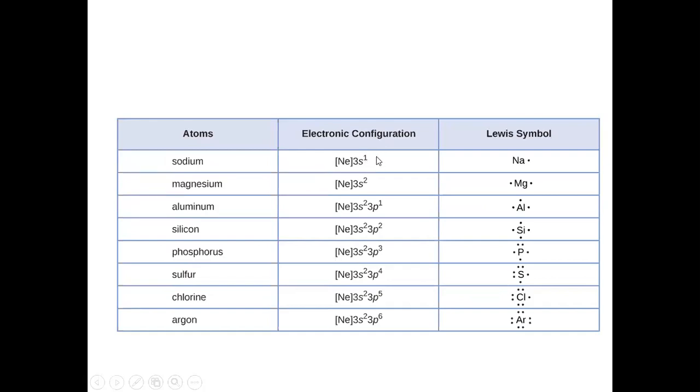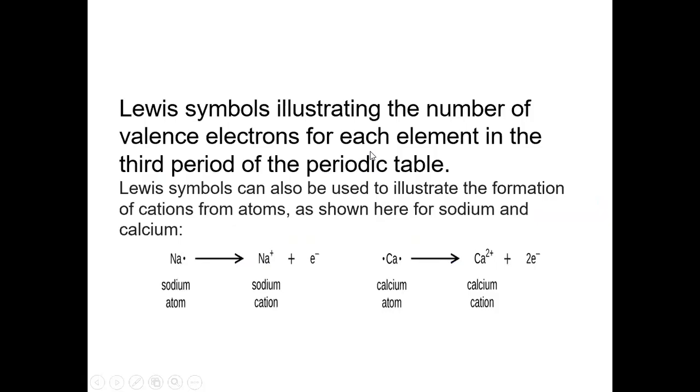For example, sodium configuration is Ar 3s1. We need to complete the octet electrons that require more amount of energy comparatively to losing the one electron from the outermost orbital. So what does it do? One electron is donated. Because the donor is the greater, that's why they gain a positive charge.